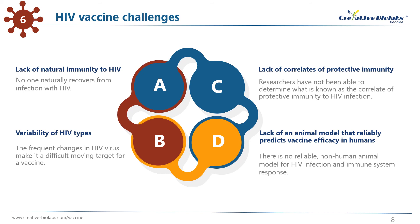A second challenge in developing a vaccine is that HIV mutates frequently. These frequent changes in the virus make it a difficult moving target for a vaccine. Additionally, there are many subtypes of HIV, each of which is genetically distinct. It's likely that additional subtypes will continue to emerge. This poses yet another challenge, as a vaccine that protects against one subtype may not provide protection against others.